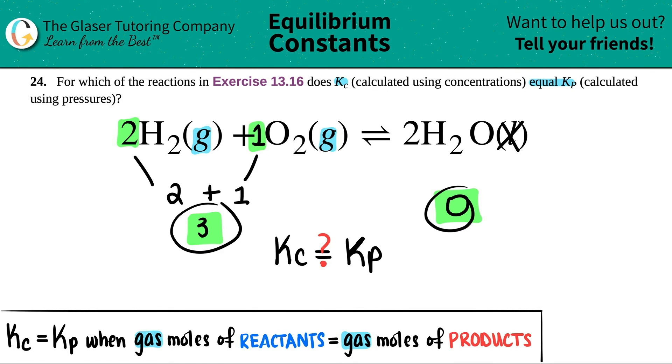So in this instance, is the Kc equal to the Kp? Yeah, you got it. It's a big fat no. Because three does not equal zero. And that's it.